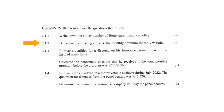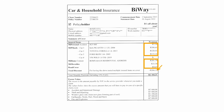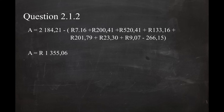In question 2.1.2, you are instructed to determine the missing value A, which is the monthly premium for the VW Polo. From Annexure A, the total monthly premium including discount equals 2,184.21 cents. The missing value A equals the total monthly premium minus the sum of the premium details plus the total discount, and this equals a premium of 1,355.06 cents.